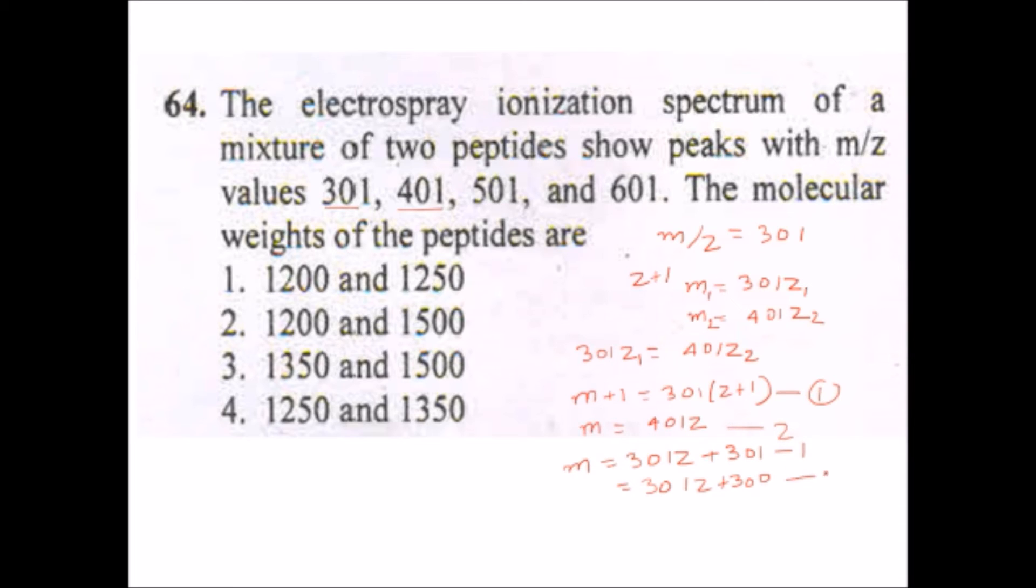From equation 1 we can solve this like: m is equals to 301z plus 301. For the m it will be minus 1, so this m will be 301z plus 300. As equation 2 and equation 2 is equals to equation 3, because the mass were from the same peptide, so it will be 401z equals to 301z plus 300.